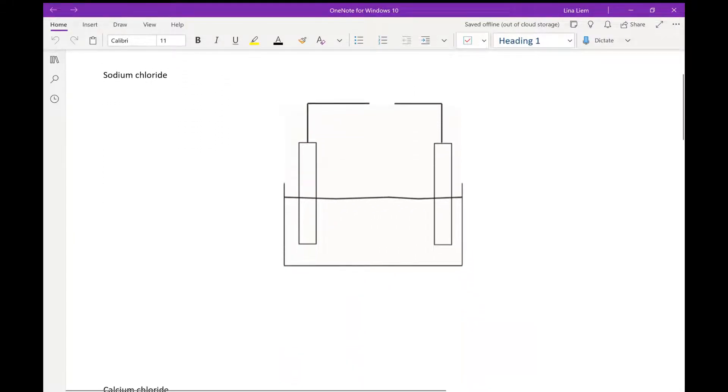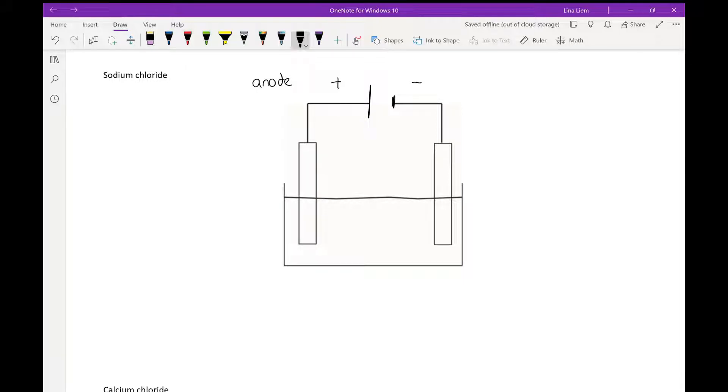Let's start with the first one, sodium chloride. I'll just draw in here the charges of the battery. Let's say that the left hand side is our positive electrode and the right hand side is negative electrode. Now remember that the positive electrodes are called the anode in electrolysis because it attracts anions, and negatively charged electrodes are called the cathode because it attracts cations.